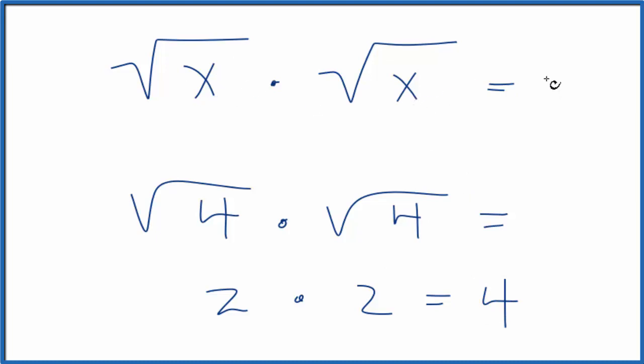Let's try some other numbers. Let's choose a number that gives us a whole number when we take the square root, let's say 16. Square root of 16 is 4 times the square root of 16. 4 times 4 equals 16, so the pattern seems to hold.